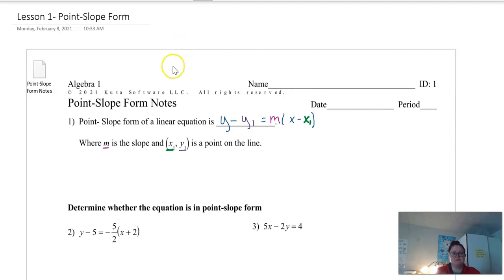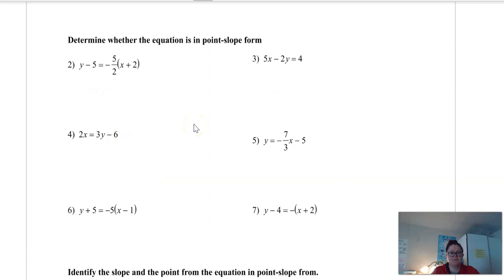Down here I have six equations. Which ones are in point-slope form? Just determine whether the equation is point-slope form. Here we've got y minus 5 equals a number, which would be our slope, times x plus 2. So this is in point-slope form.